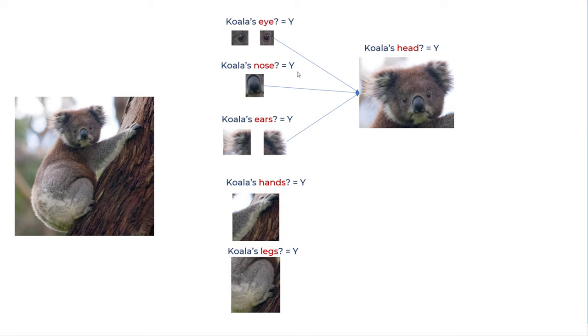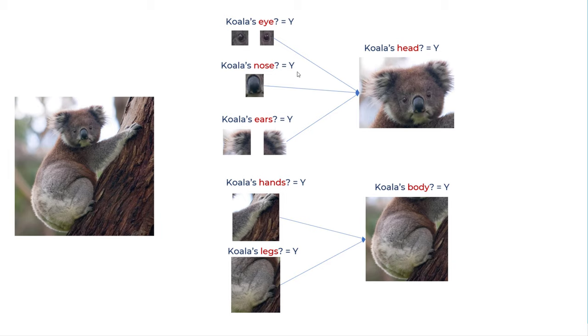Similarly, if there is koala's hands and legs, it means there is koala's body. And there are different set of neurons which are connected to these neurons which will again aggregate the results saying that, if the image has koala's head and body, it means it is koala's image.